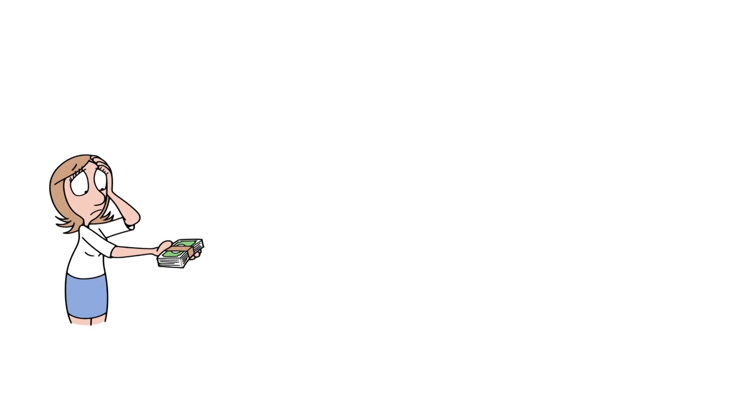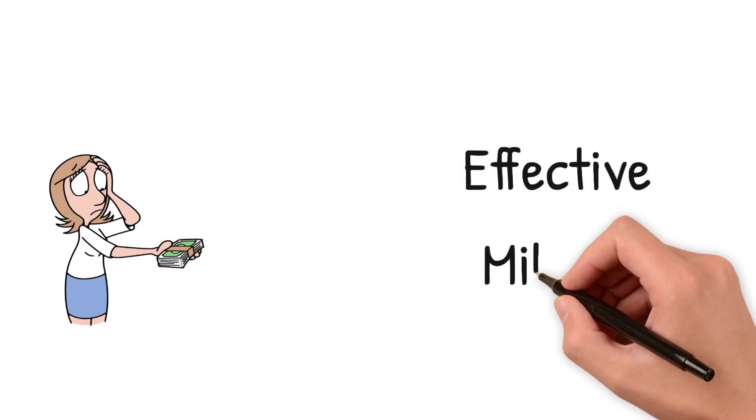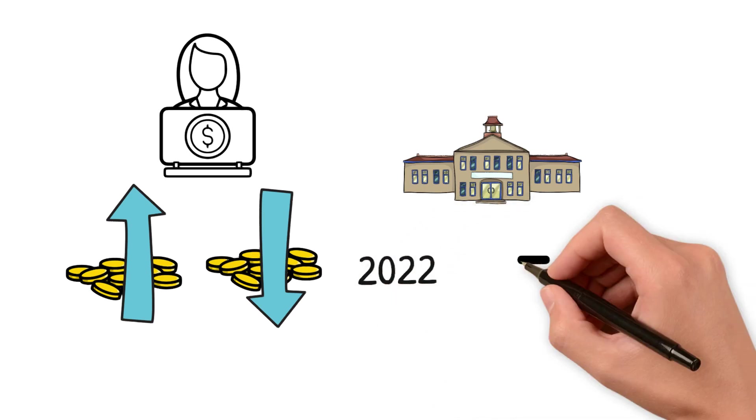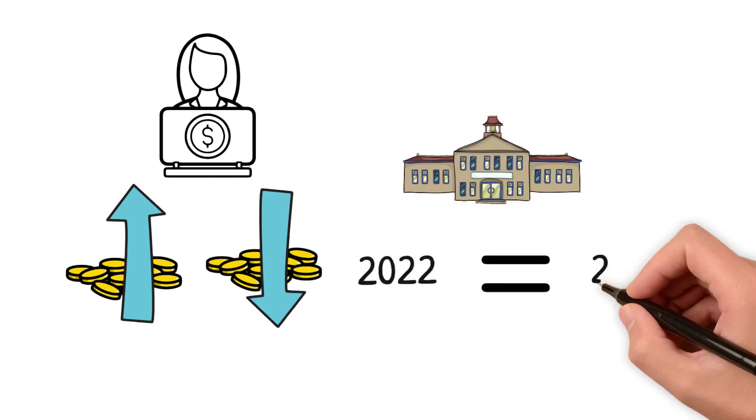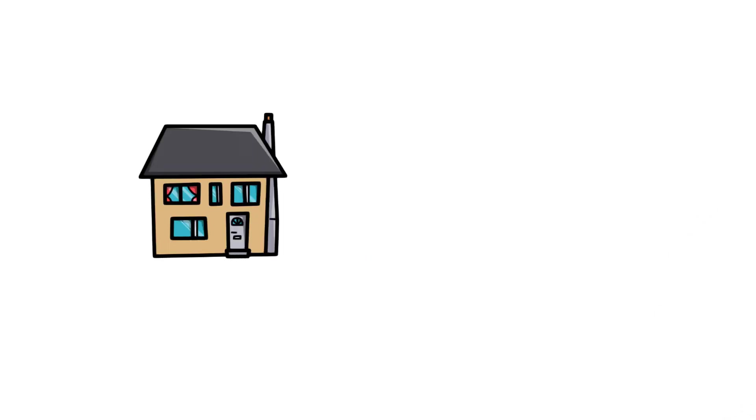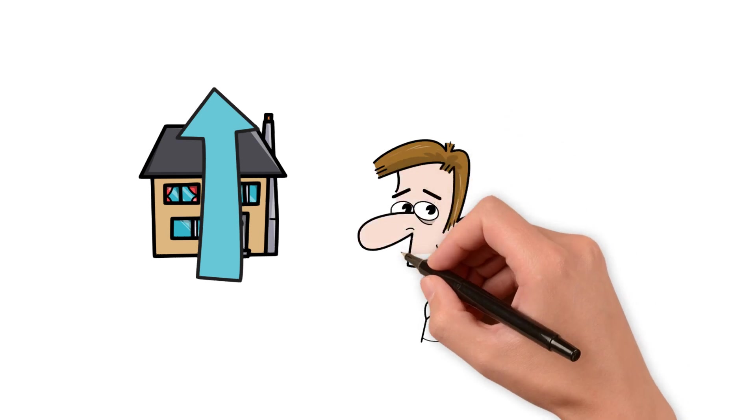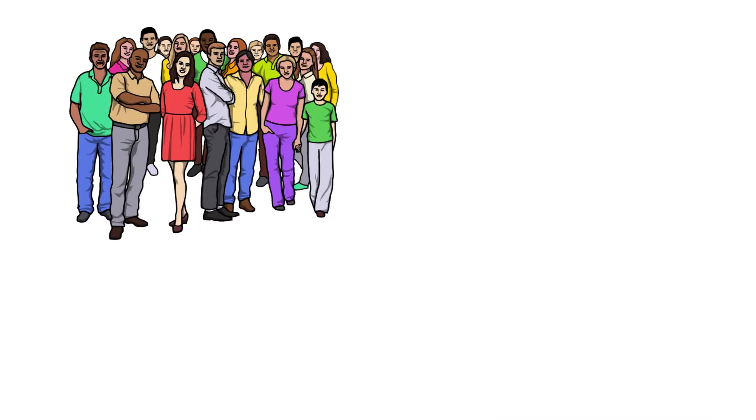However, this is where effective millage comes in. Remember, the Butler County Auditor will increase or decrease Lakota's outside millage, which is the amount voters approve, to make sure the schools don't collect more millage than they did last year. So even if the appraised value of our house goes up, my parents will have to pay that much more in property taxes for Lakota.